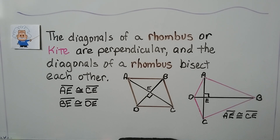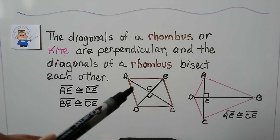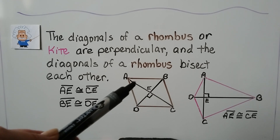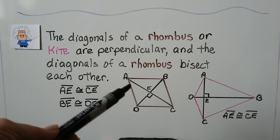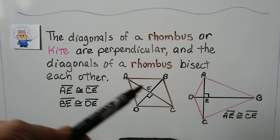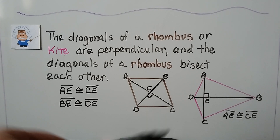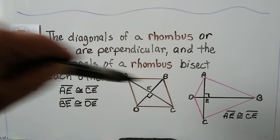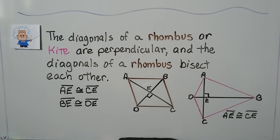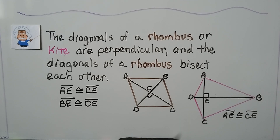The diagonals of a rhombus or kite are perpendicular, and the diagonals of a rhombus bisect each other. So for this rhombus, segment AE is congruent to CE, and segment DE is congruent to BE. But on a kite, only one diagonal bisects the other — only one pair of segments is congruent.